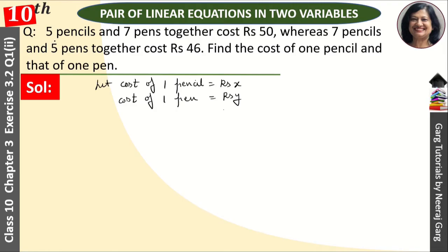We have from the question that 5 pencils and 7 pens together cost rupees 50, so our first equation will be 5x plus 7y equals 50. The second equation will be 7 pencils and 5 pens together cost rupees 46, so 7x plus 5y equals 46. These are our two equations.